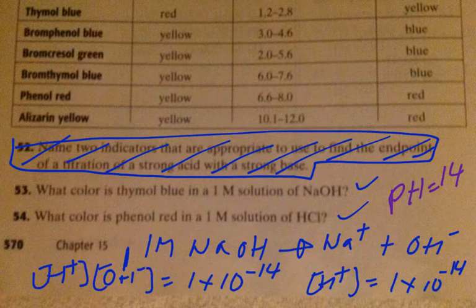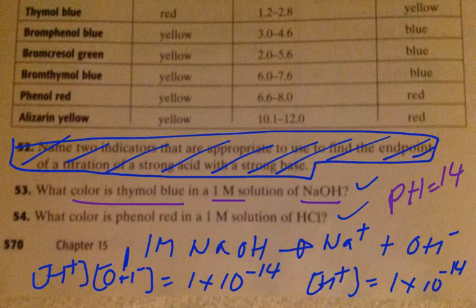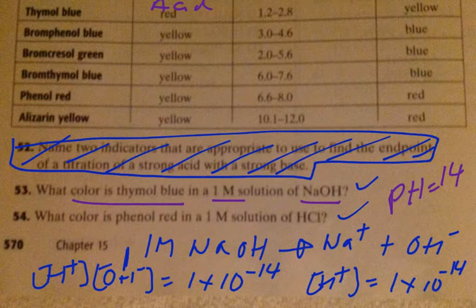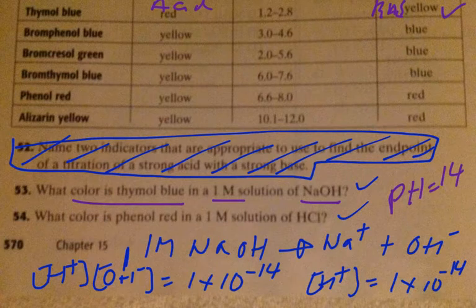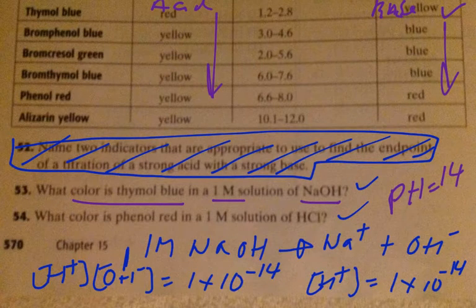So what color would thymol blue be in one big M of NaOH? You look at your chart. This was the acid range, which I cut it out, and this was the base range over here. In thymol blue, your color would be yellow. So over here to the right was base, and over here was your acid range.